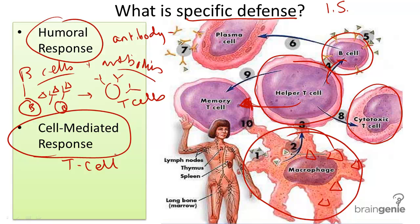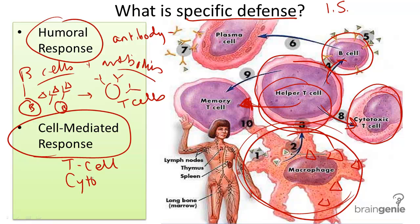What happens is the macrophage will engulf an antigen, display it on its membrane, and then signal for the right helper T cell to activate the cytotoxic T cells. These cells destroy pathogens and release chemicals called cytokines. Cytokines further activate the immune system to bring other lymphocytes, or white blood cells, to where they are most needed.